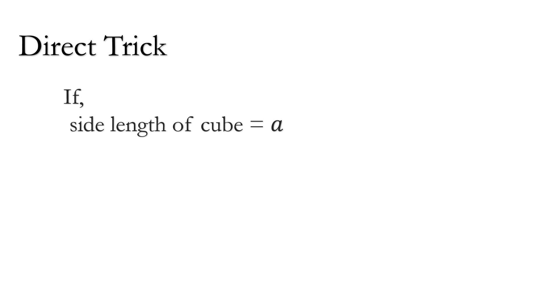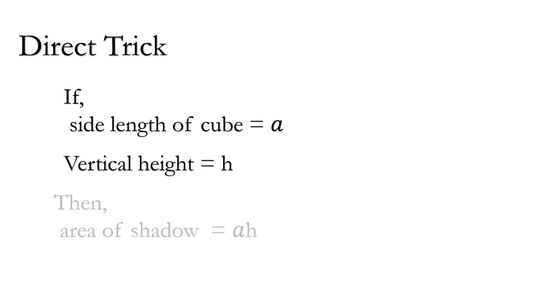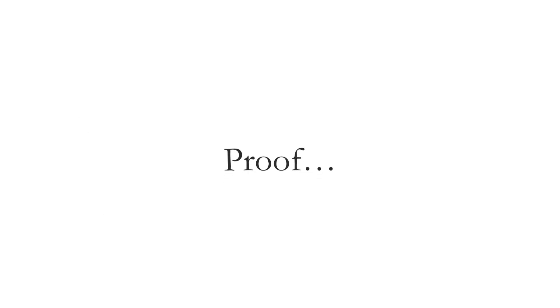First, we will discuss the direct trick to solve this question and after that we will prove it. So, if the side length of the cube is a and the vertical height is h, then the area of shadow becomes a times h. Now we will prove it.